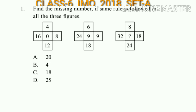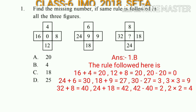Question number 1: Find the missing number if the same rule is followed in all three figures. In the first figure: 16 plus 4 equals 20, 12 plus 8 equals 20, and 20 minus 20 equals 0, which is in the middle. In the second figure: 24 plus 6 equals 30, 18 plus 9 equals 27, 30 minus 27 equals 3, and square of 3 is 9. Similarly, in the third figure: 32 plus 8 is 40, 24 plus 18 is 42, 42 minus 40 is 2, and square of 2 is 4. So the answer will be option B.